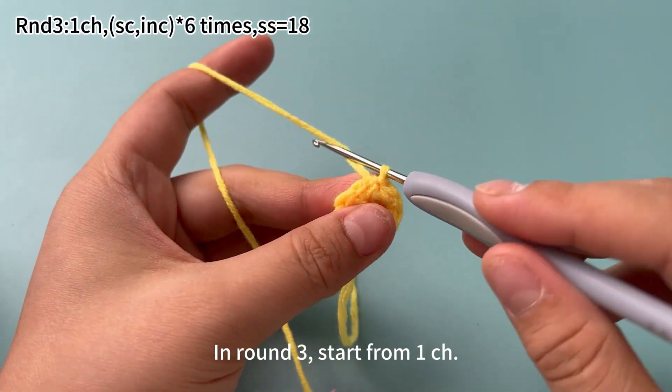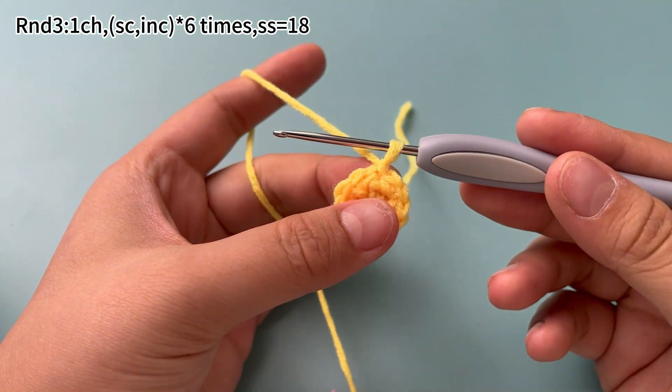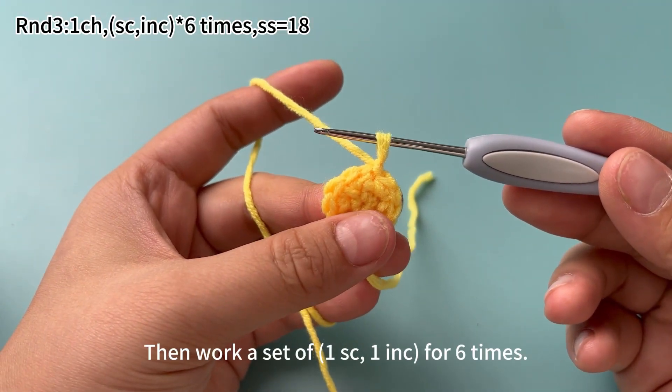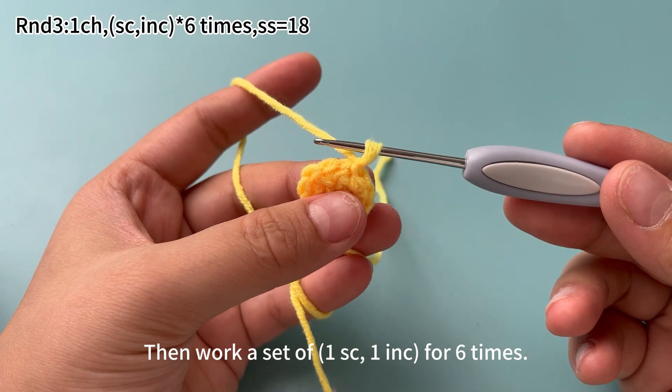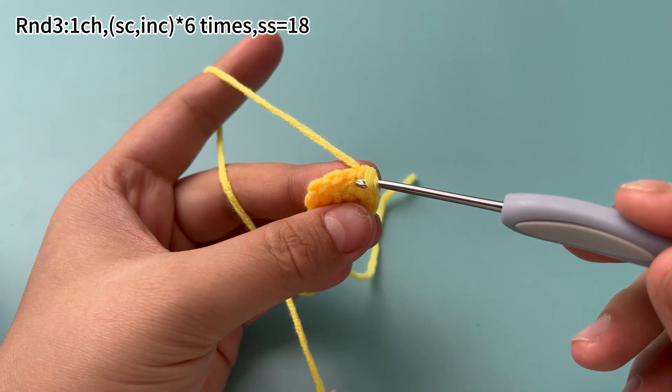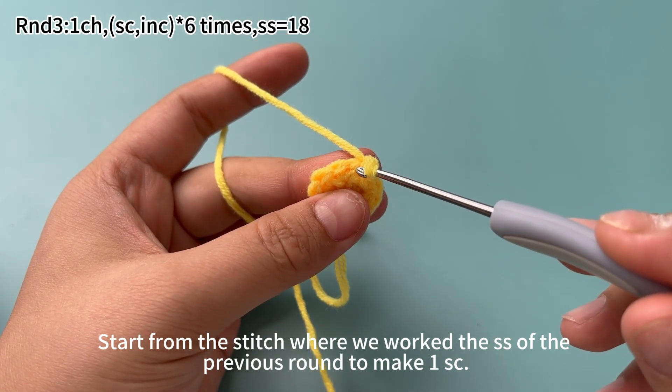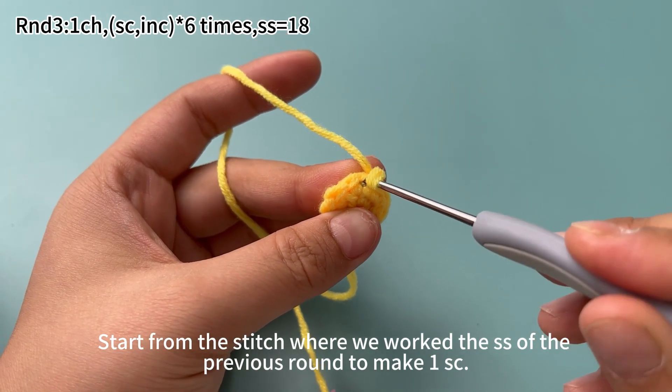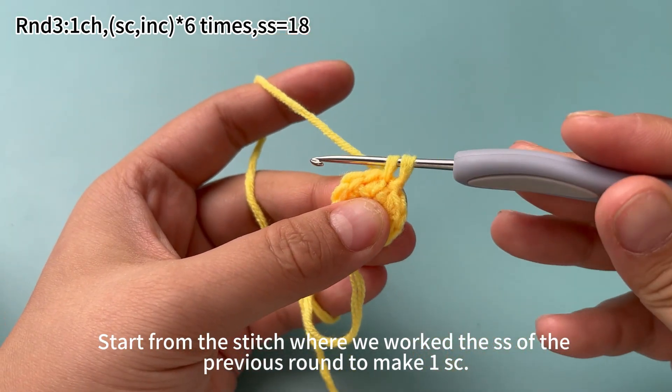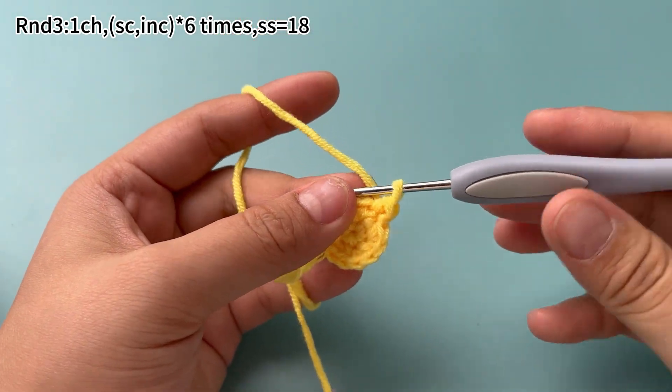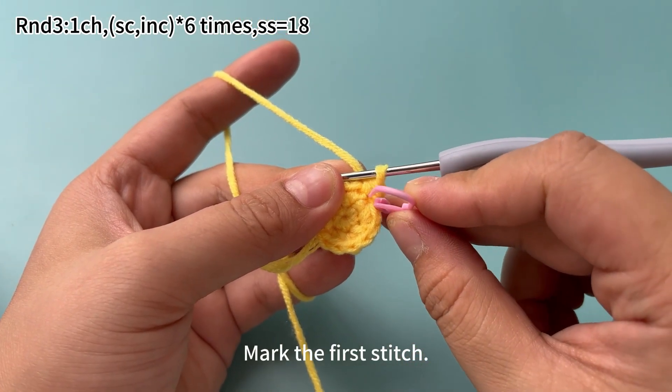In round 3, start from 1 chain stitch. Then work a set of 1 single crochet, 1 increase for 6 times. Start from the stitch where we worked the slip stitch of the previous round to make 1 single crochet. Mark the first stitch.